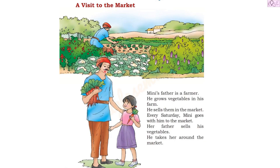Can you see the field full of vegetables? There are cauliflowers and carrots. Mini's father is a farmer. He grows vegetables in his farm and sells them in the market every Saturday. Mini goes with him to the market. Her father sells his vegetables and takes her around the market. Let's go to the market with Mini's father!